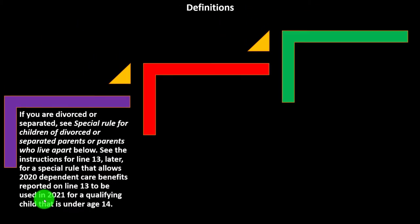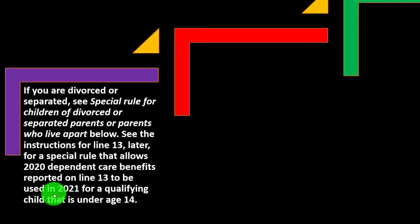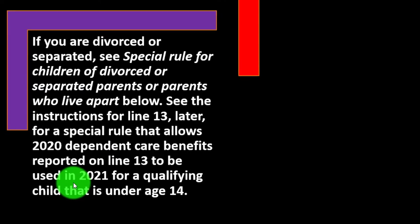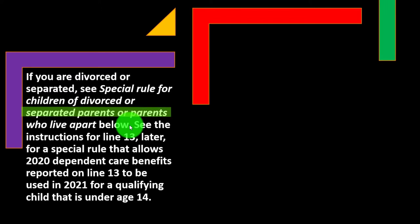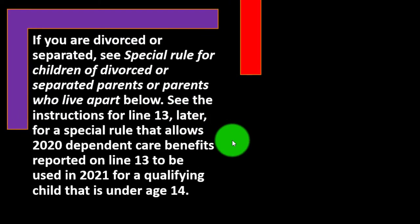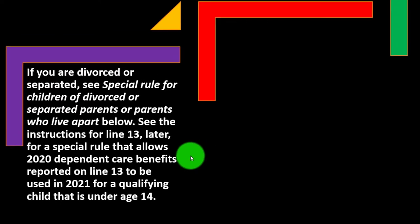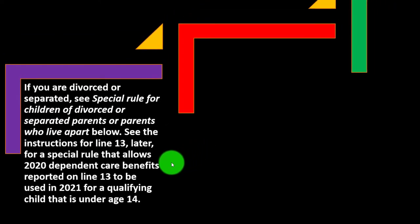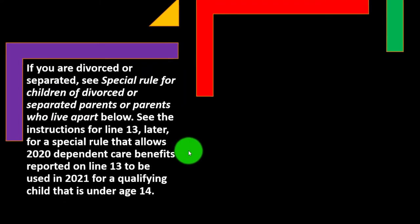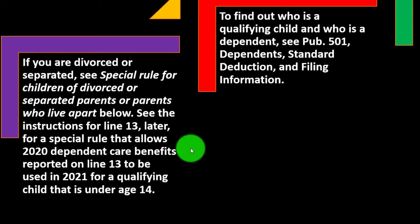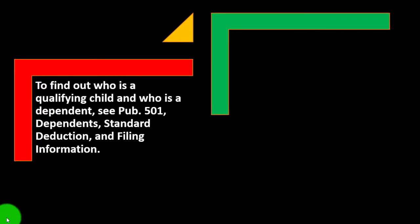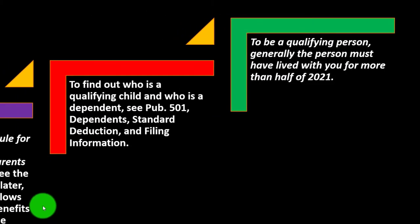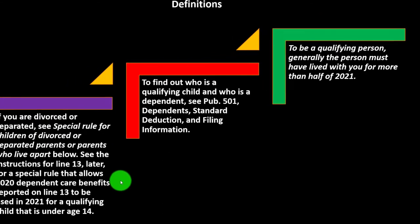Definitions continued. If you are divorced or separated, see the special rule for children of divorced or separated parents or parents who live apart. There's also a special rule that allows 2020 dependent care benefits reported on line 13 to be used in 2021 for a qualified child under age 14. To find out who is a qualifying child or dependent, see Publication 501. Generally, the person must have lived with you for more than half of 2021.